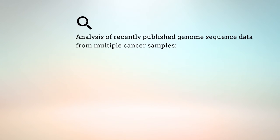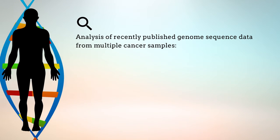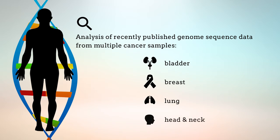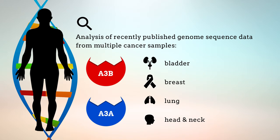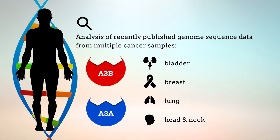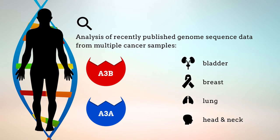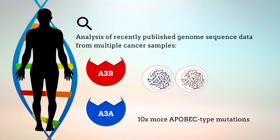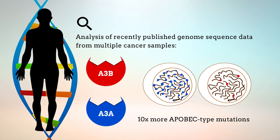Analysis of recently published genome sequence data from multiple samples of human bladder, breast, lung, and head and neck cancers revealed that many of these samples had significant signatures of A3A or A3B mutagenesis, with A3A-like signatures being more common. Interestingly, the cancers with more A3A-like signatures had over 10 times more APOBEC-type mutations than the cancers with A3B-like signatures.